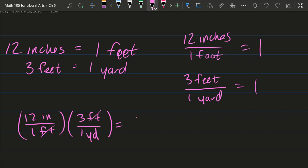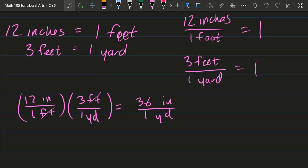So 12 times 3 is 36 and our units, the only unit left is inches. So 36 inches divided by, on the bottom one, the feet is gone so it's 1 times 1 is 1 yard. So this tells me there's 36 inches per yard or 36 inches in a yard. Now you could have grabbed the yardstick and counted them out, but this is inches in one yard.